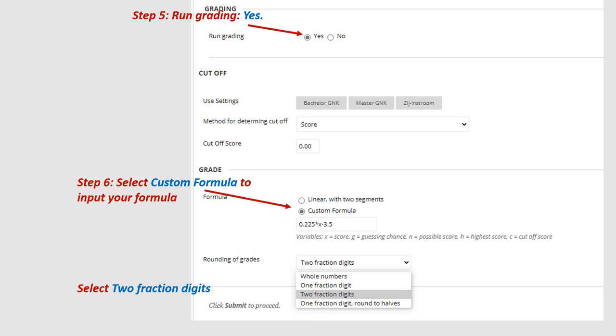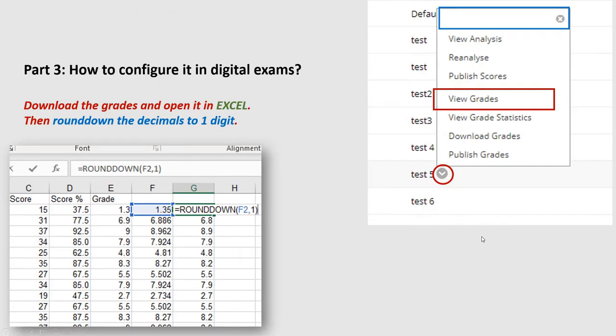And don't forget to choose two fraction digits. Otherwise, Blackboard will round all the decimals sometimes up. And then you need to click Submit. And then you can see the new test is listed below the default analysis. If you click the triangle, you start the menu. In the pop-up menu, you choose View Grades. And then you can download your grades. Look, in the download grades, it is saved in Excel. And they have more decimals here. So you should have seen two decimals. And in the Excel, you can simply type round down this cell, this grade, and comma, choose one decimal. And then all the grades will be round down to one decimal. So this is student's final grade, after correction of the lucky score.